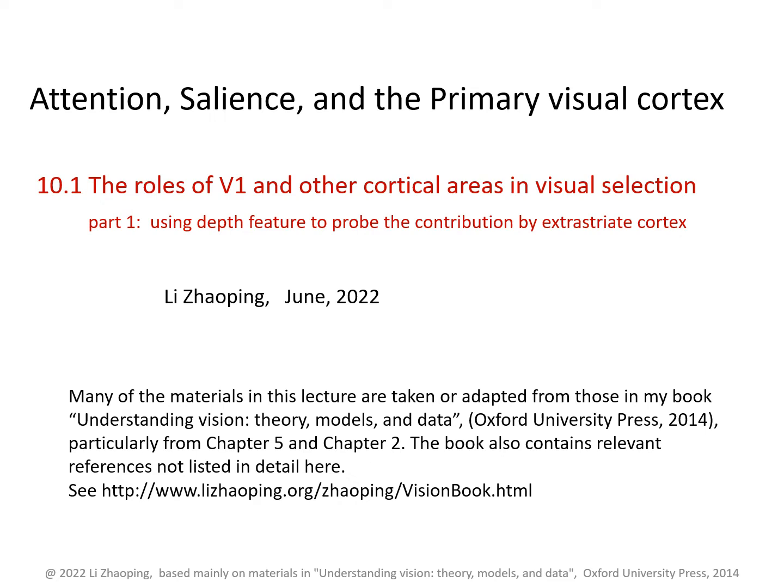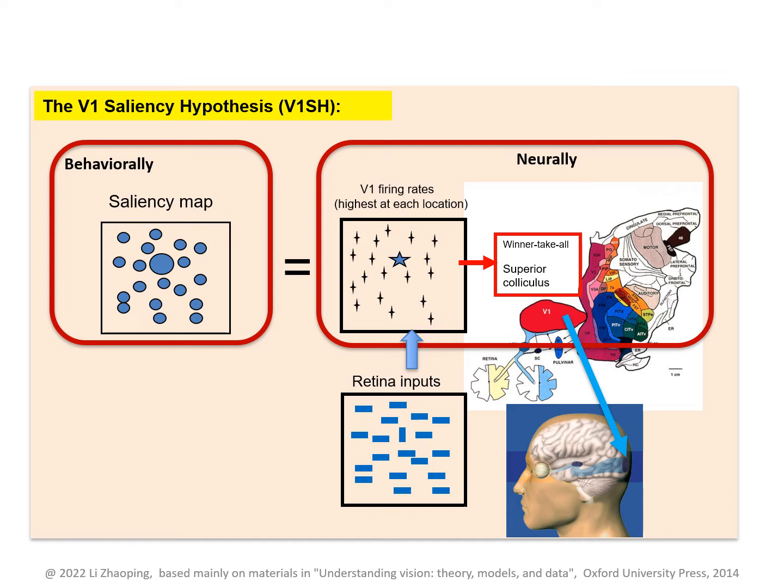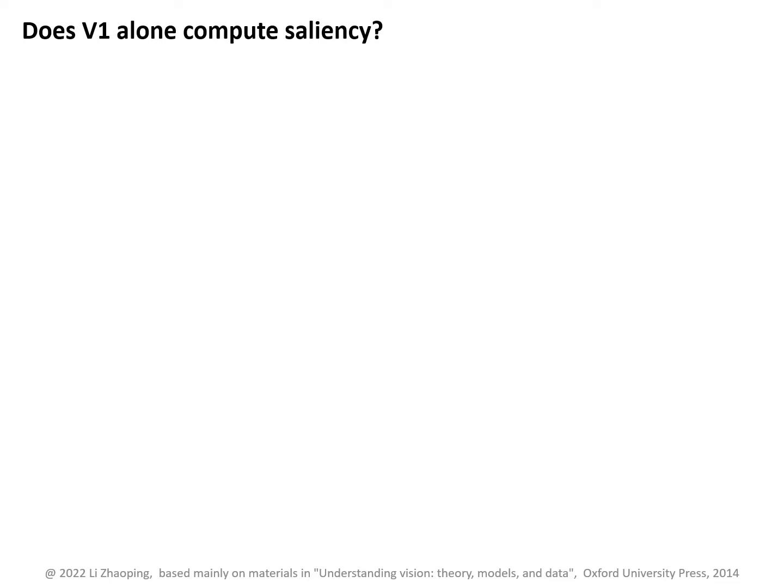The roles of V1 and other cortical areas in visual selection, part one: using depth feature to probe the contribution by extrastriate cortex. We have shown various pieces of evidence that V1 computes a saliency map to guide visual selection exogenously. Now let's ask: does V1 compute saliency alone, or do extrastriate cortical areas also contribute?